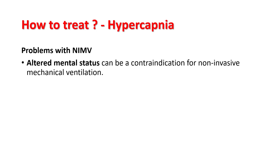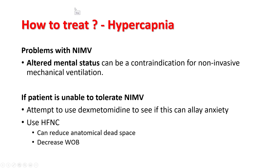What are the problems with non-invasive ventilation? The most important is altered mental status, which can be a contraindication. Understand that hypercapnia itself can cause changes in mental status, and you have to figure out if a trial of non-invasive ventilation would help. If the patient is delirious and unable to tolerate NIV, you can use drugs like dexmedetomidine, which can decrease anxiety without affecting the respiratory system. You can also attempt high-flow nasal cannula, which can reduce anatomical dead space and decrease work of breathing; however, the effect size for treating hypercapnia with high flow is pretty low.